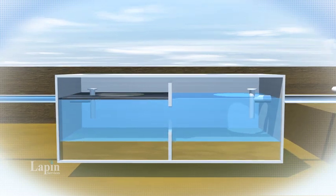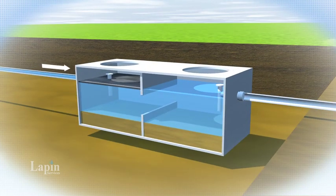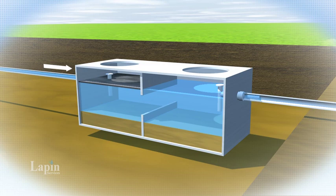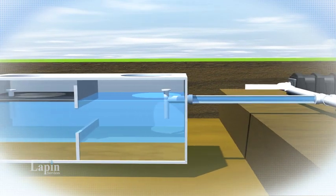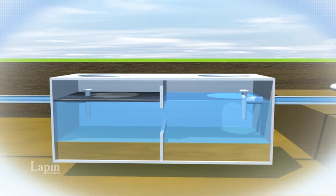The septic tank will always be full. As wastewater enters the tank, an equal amount will exit the tank from the other side through an outlet tee. Inside the tank, natural bacteria break down the solids.